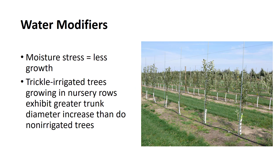The growth of plants in the nursery is greatly influenced by the availability of water. Trees suffering from moisture stress produce significantly less growth than trees growing under optimum levels of soil moisture. Trickle irrigated trees growing in nursery rows exhibit greater trunk diameter increase than do non-irrigated trees.